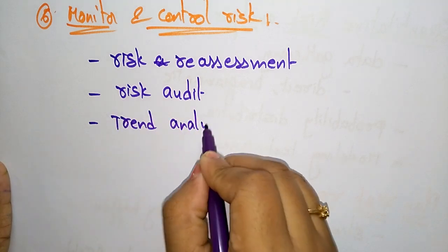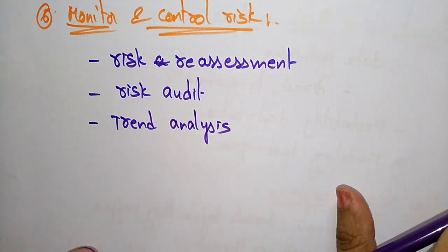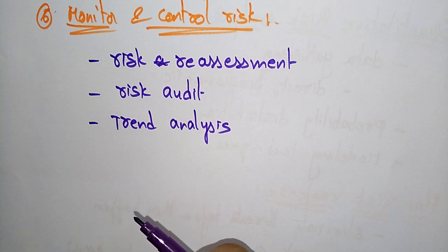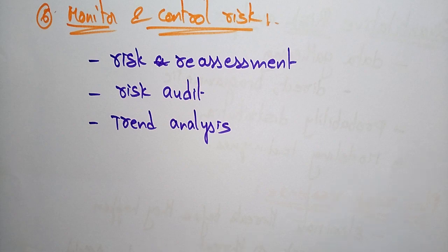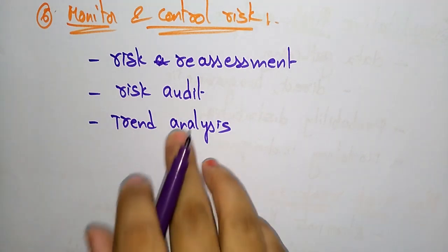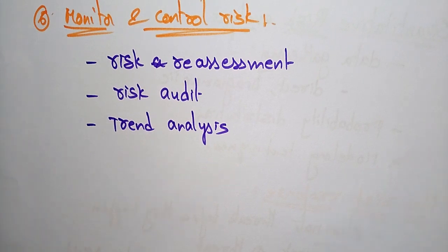Trend analysis is used to monitor overall project performance. To summarize: risk re-assessment means reassessing risks by scheduling reviews on a regular basis; risk audit examines the effectiveness of planned risk responses; and trend analysis monitors overall project performance. These are the six risk management processes in project management.